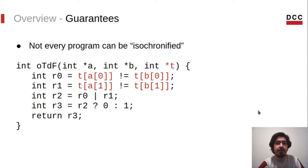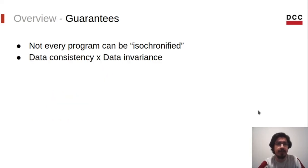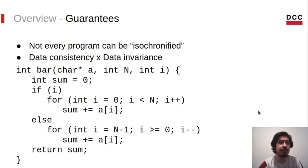Nevertheless, there must be a class of programs that can be safely transformed, right? To identify them, we have to define the concept of data consistency. Data consistency is basically a weaker version of data invariance. It also requires all memory accesses to be the same regardless of any input, but without imposing constraints on the accesses ordering. To illustrate, consider this bar function. It will always access the first n positions of array A, regardless of whether it takes the true or the false branch. If we can remove the condition statement without changing the result of the function, then we are done. Every data consistent program can be fully isochronified without introducing possible bugs. This is exactly what we want - this is the best case.